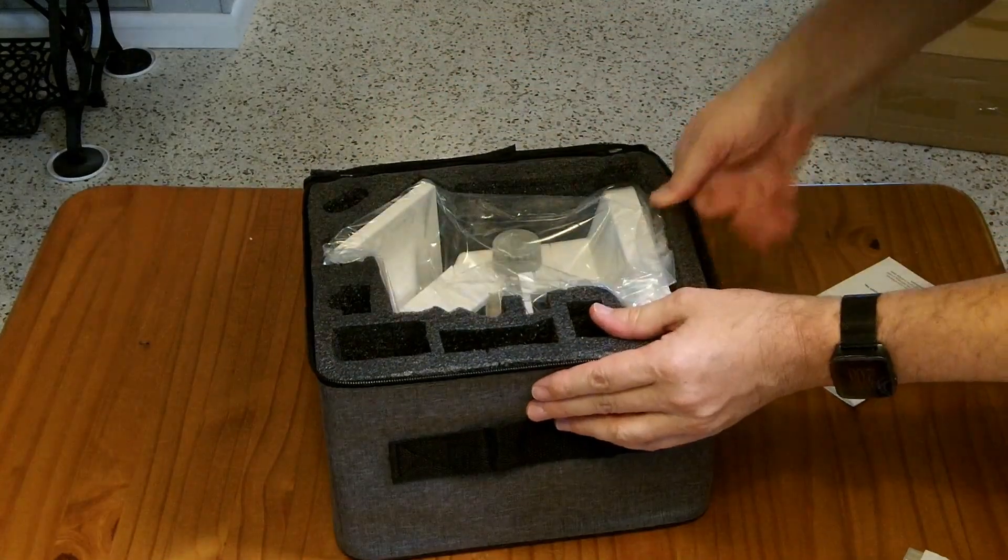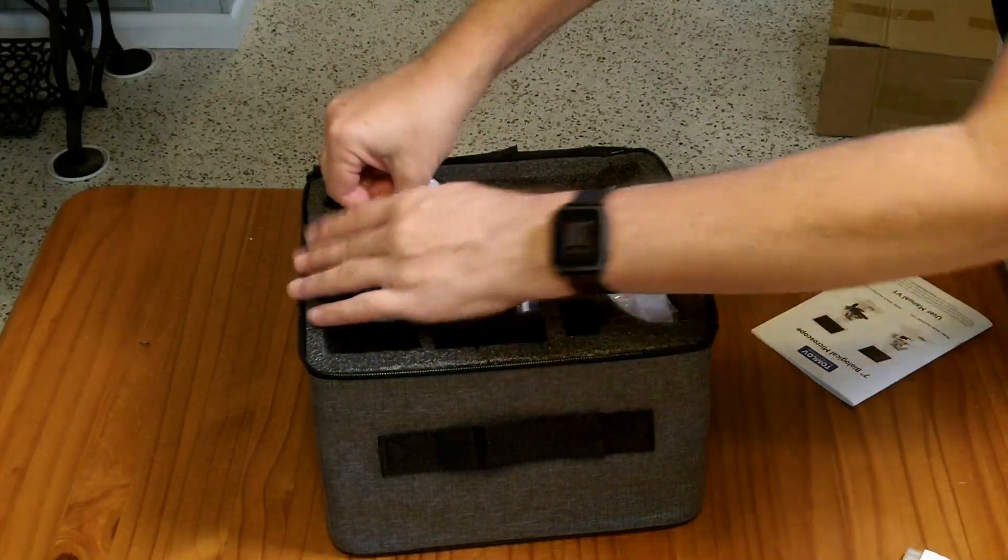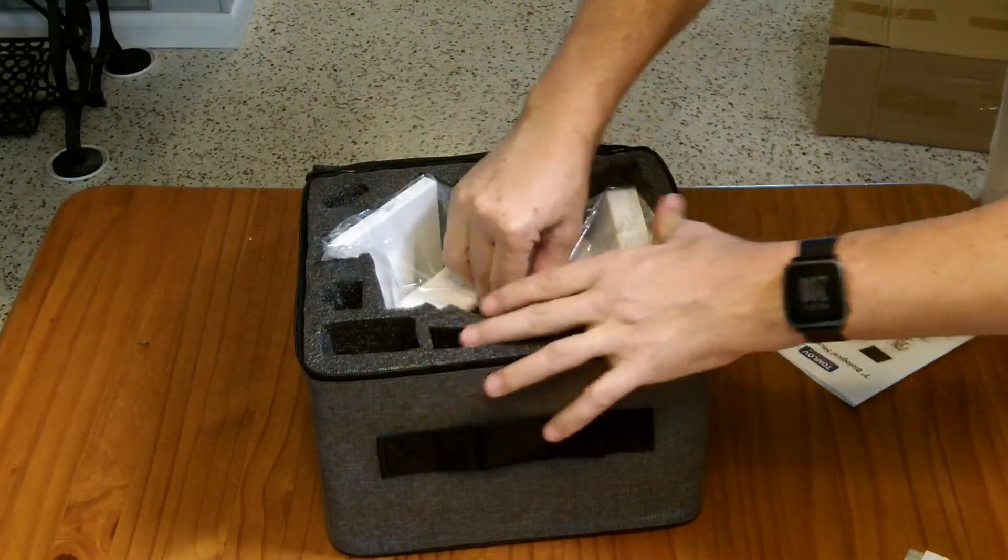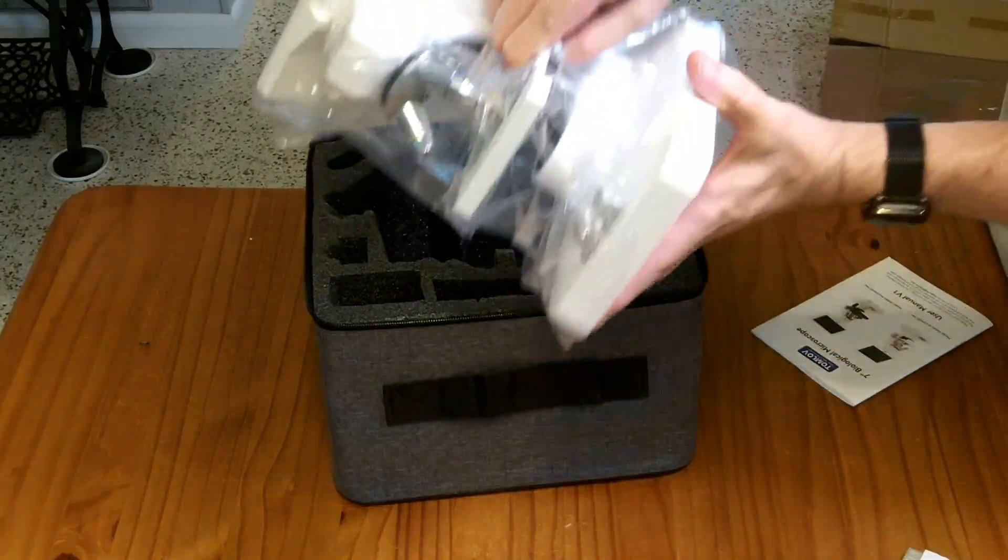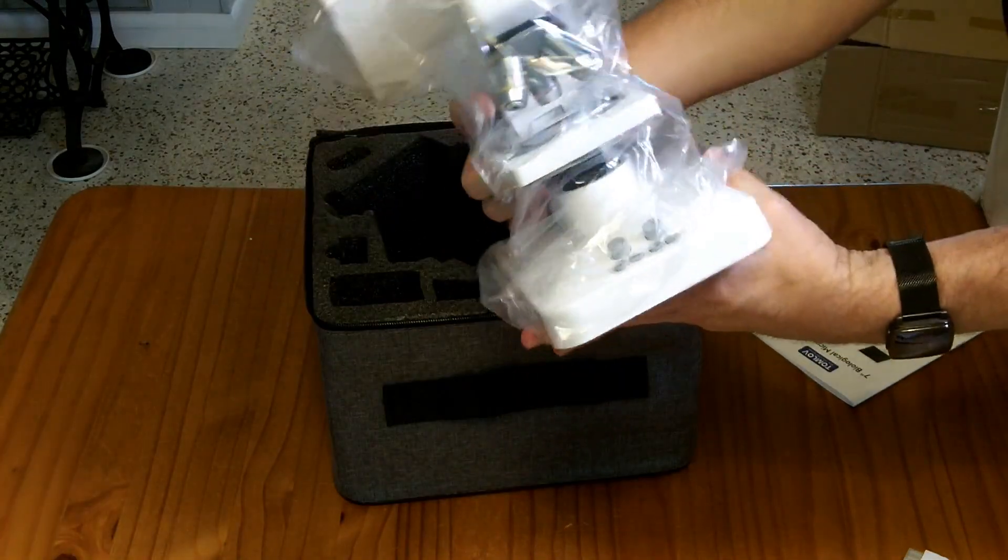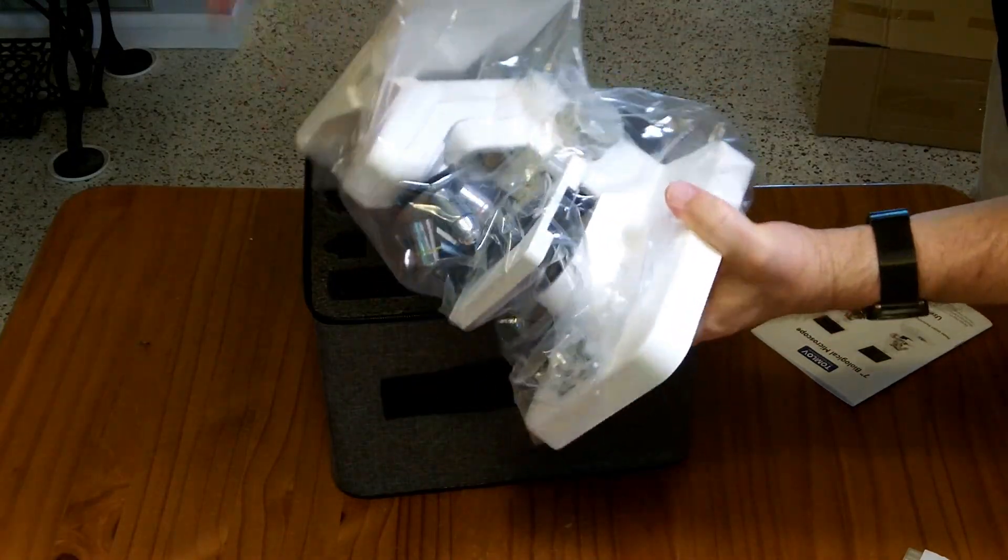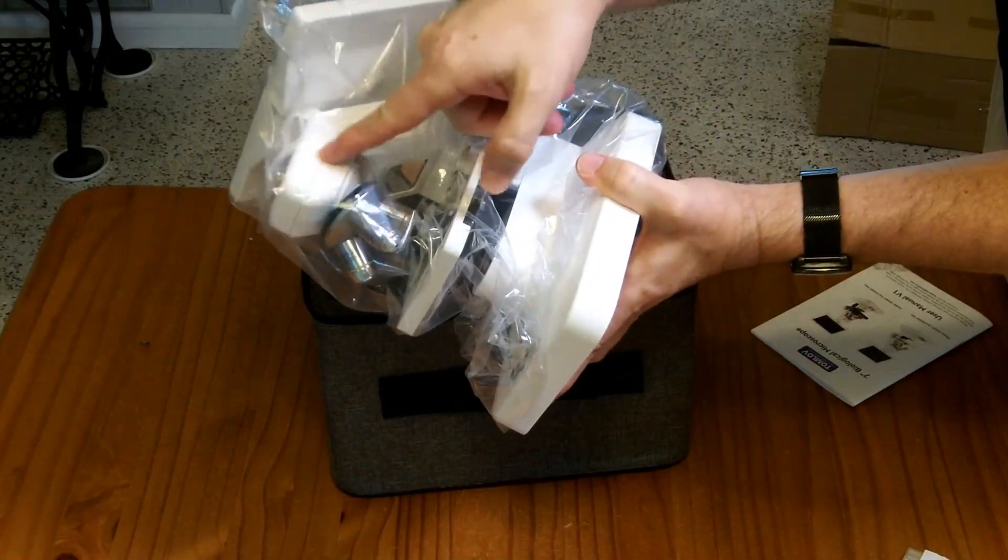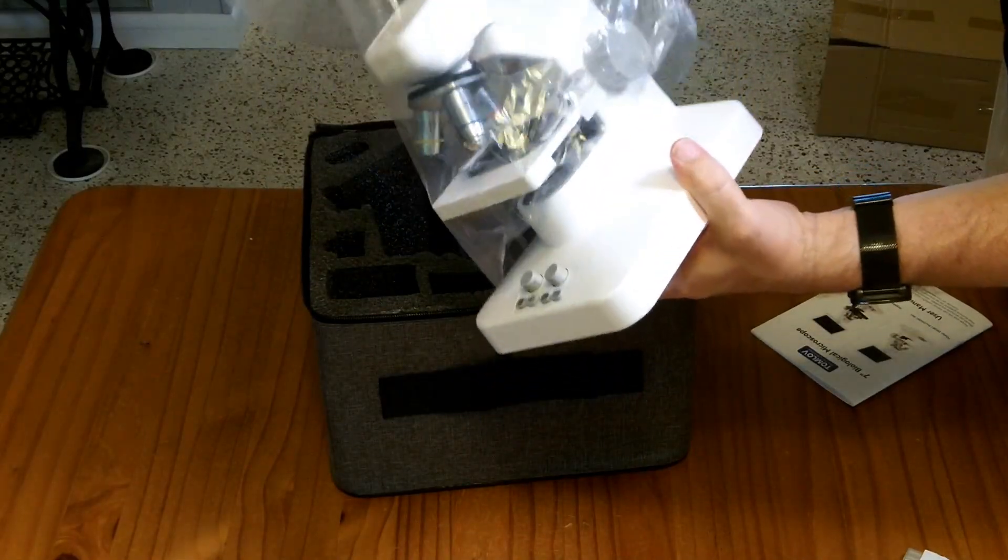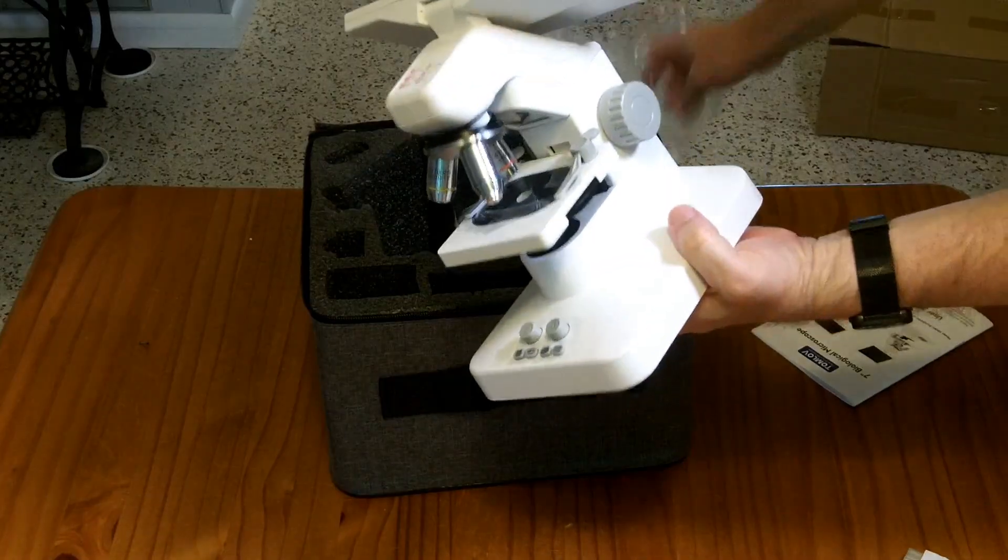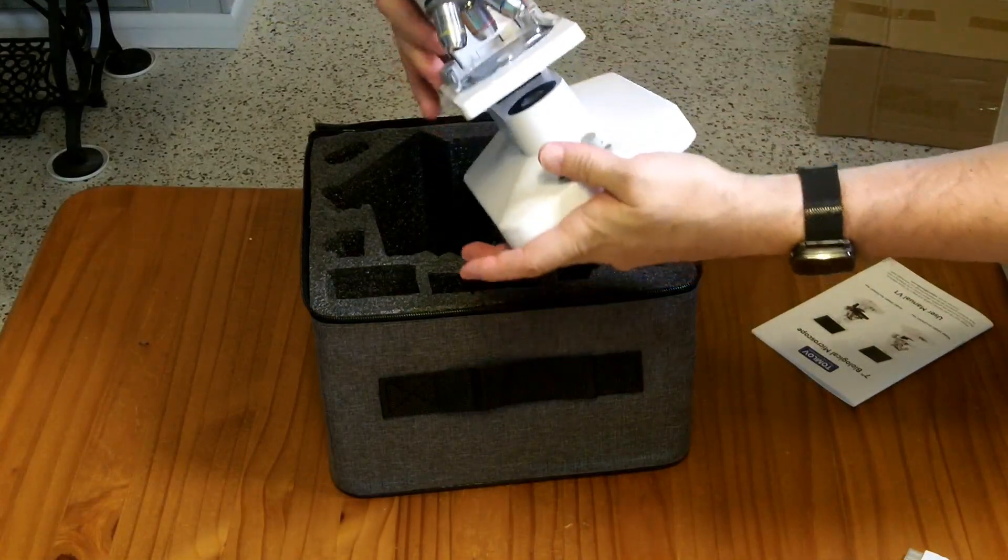And then we have the main microscope itself. There's this screen here and the microscope body. You can see here that the screen folds up, but the camera is actually down in there as part of the microscope. So this is not a microscope where you can put your own eyepiece on. It is only going to work through the camera and through this screen.